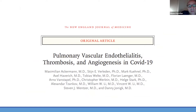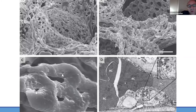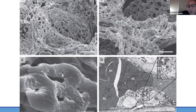This study published today showed pulmonary vascular endothelitis, thrombosis, and angiogenesis in COVID-19. The electron microscopy images show in panel A normal endothelial cells, and on the right side you can see disrupted cells. In another area you see angiogenesis with a pillar in the middle where angiogenesis is happening around it. In another panel you see the virus inside the cell — at higher magnification you can see the virus itself inside the endothelial cells.